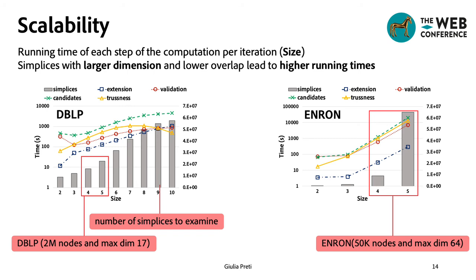And in particular, by looking at a number of simplices of size 5 in Enron, we can see that this number is almost three times larger than the corresponding number of DBLP.